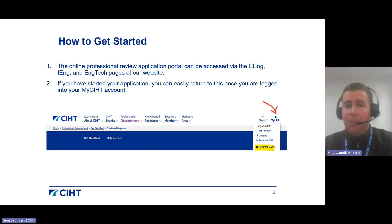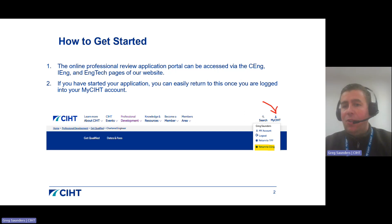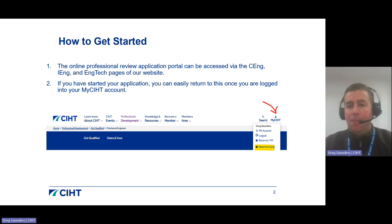One of the great benefits of the online system is that you can save your progress as you go, so it doesn't need to be completed in one session and you can go back into it at any time. Once you have made a start on your application you can easily return to it through your My CIHT account — simply click My CIHT in the top right-hand corner of the screen once you're logged in, and there will be an option to return to your application.